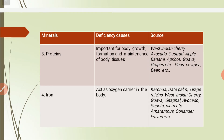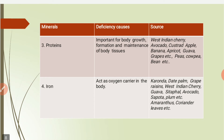Proteins are important for body growth, formation, and maintenance of body tissues. Sources include West Indian cherry, avocado, custard apple, banana, apricot, guava, grapes, and in vegetables, peas, cowpea, and beans.